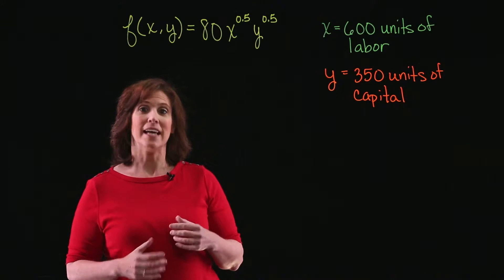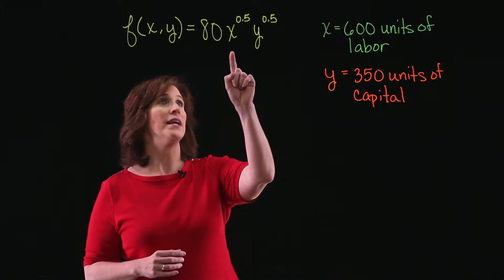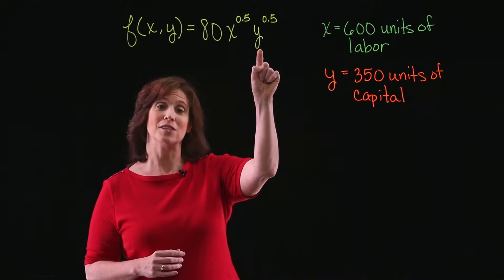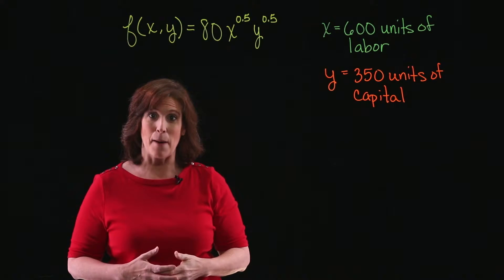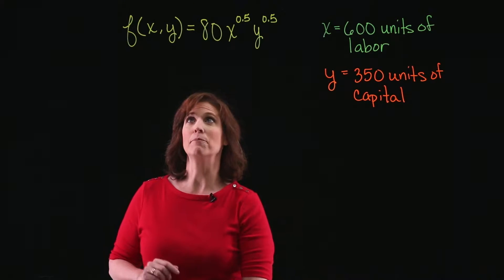The Cobb-Douglas model tells us that there's a relationship between the units that are used for labor, the units that are used for capital, and the level of production in a company.